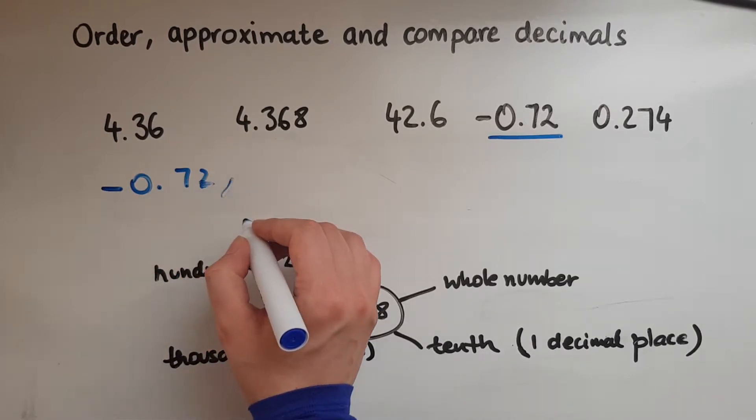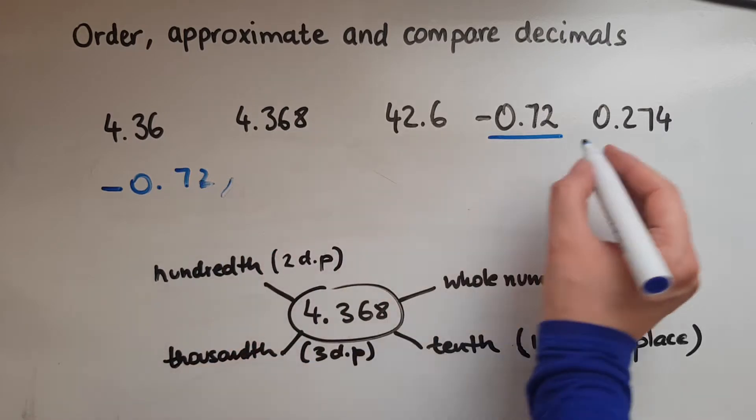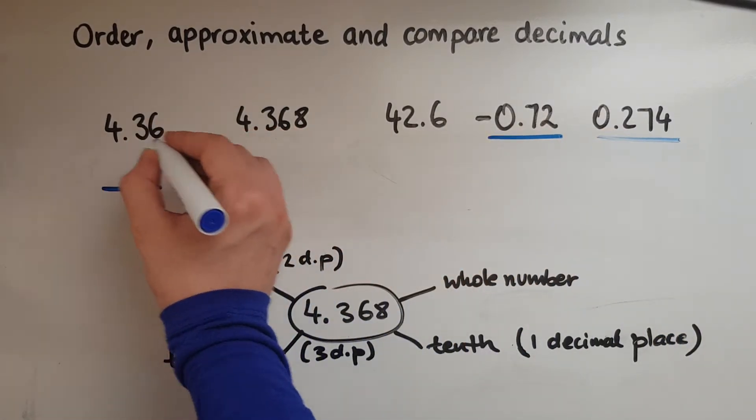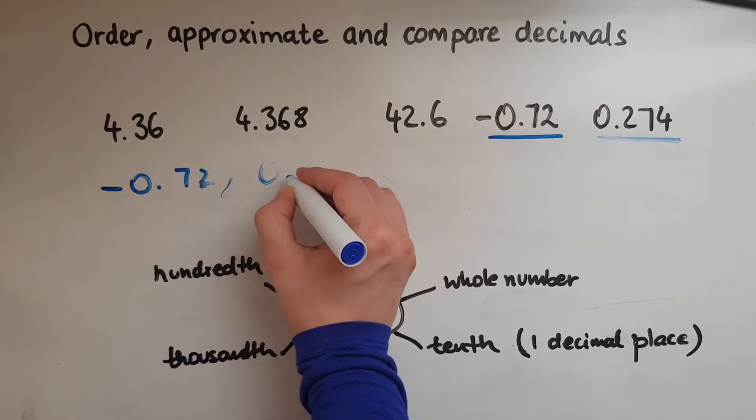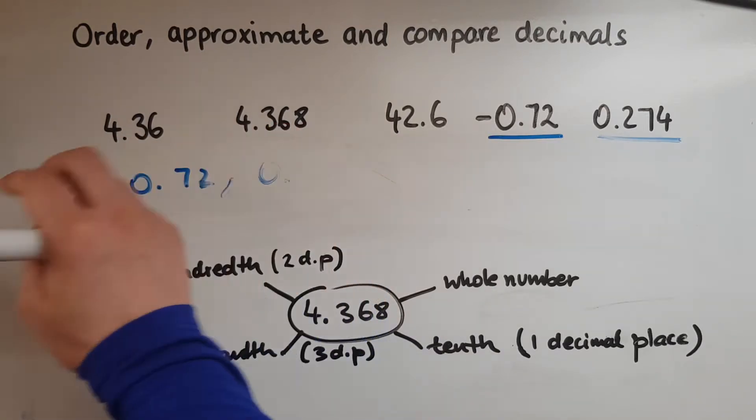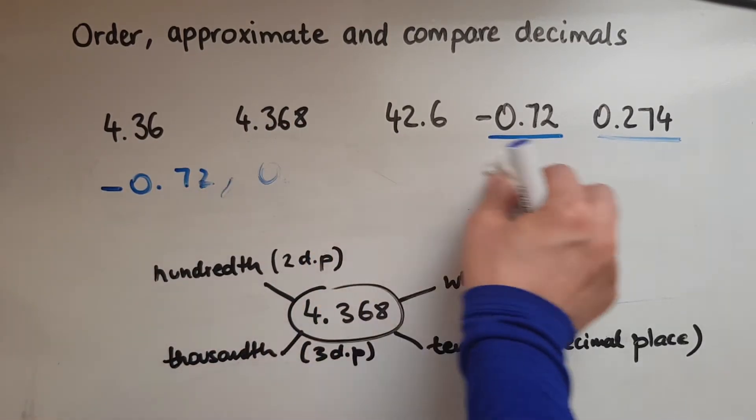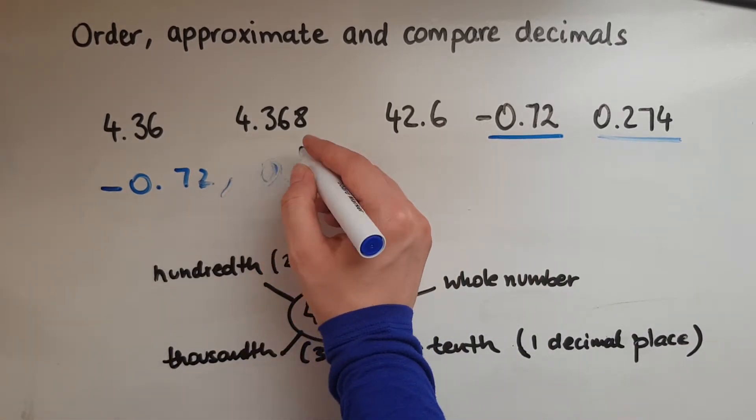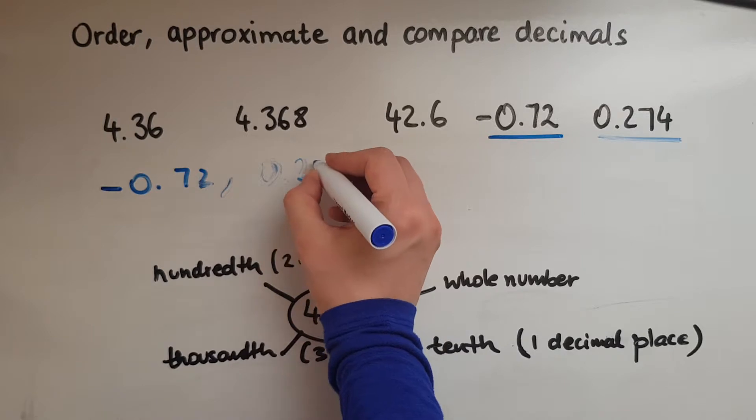And then the next biggest one would be this one because it has 0 whole ones, whereas this one has 4, and this is 4, and this is 4. So 0.274.